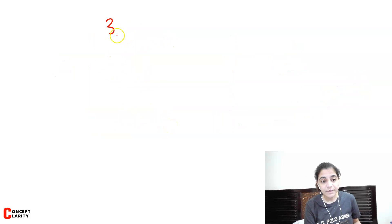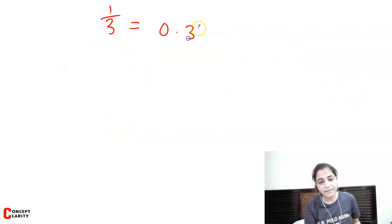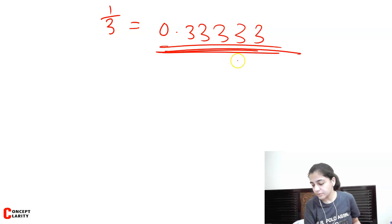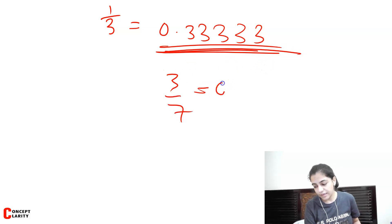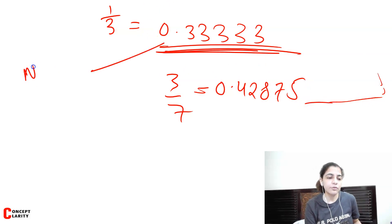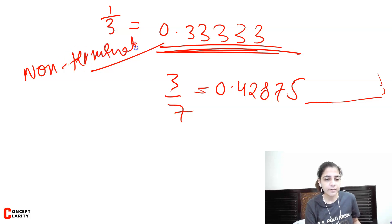After terminating numbers, there are non-terminating numbers — those which do not end. Like 1 by 3, which gives 0.3333... going on and on. It does not end. Similarly, 3 by 7 gives 0.428571... continuing without end. Those numbers which do not end are called non-terminating numbers.